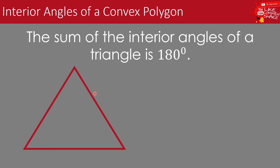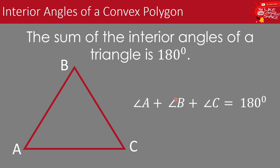We have this triangle, and we can name it triangle ABC. Since the sum of the interior angles of a triangle is 180 degrees, in symbol we have: angle A plus angle B plus angle C is equal to 180 degrees. So this is angle A, angle B, and angle C, which is equal to 180 degrees.